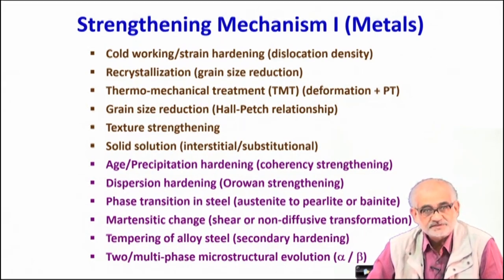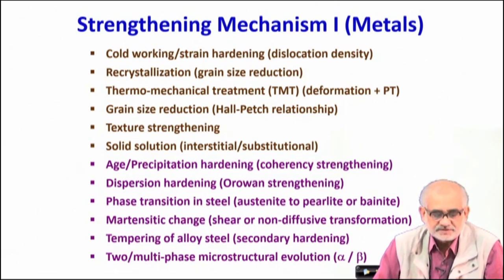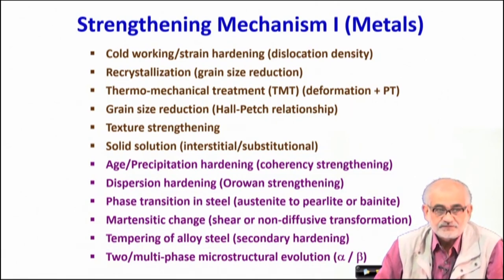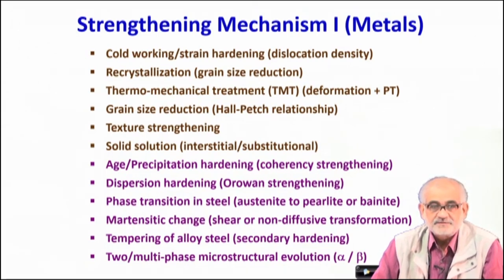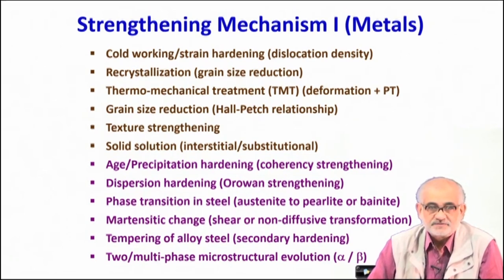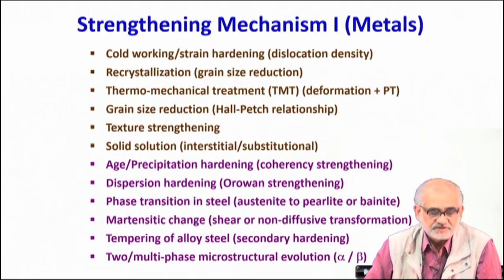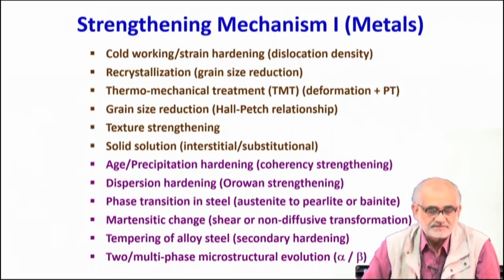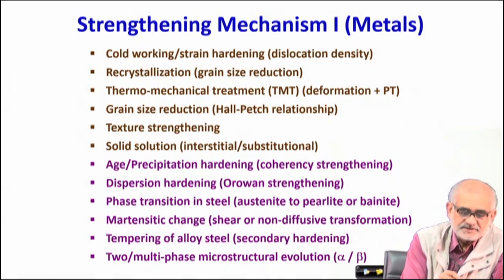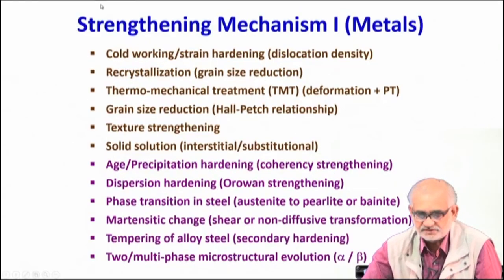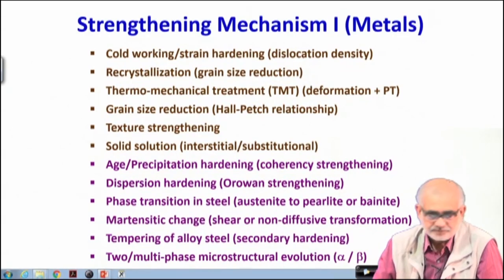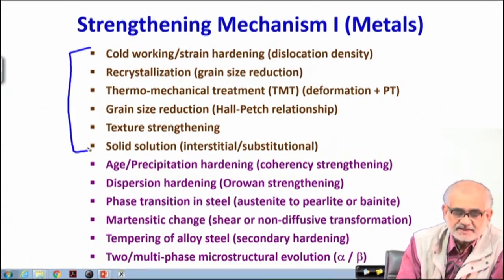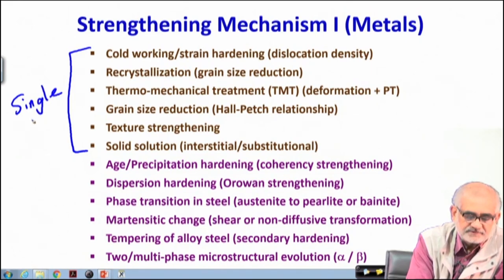Tomorrow we will discuss in the next lecture on strengthening mechanisms applicable to nonmetallic materials. Talking about metals and alloys, we are talking about an aggregate where the cations are arranged in three dimensions in a regular and repeated manner with three-dimensional periodicity, and this periodic array is permeated by a free electron cloud. The first set of strengthening mechanisms are typically applicable to single-phase materials.